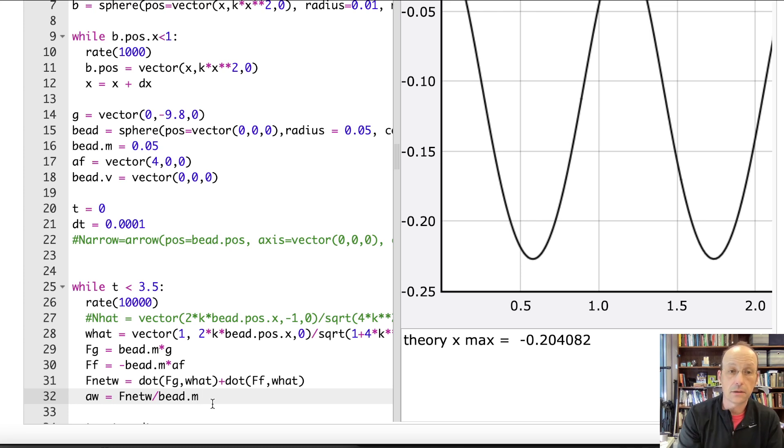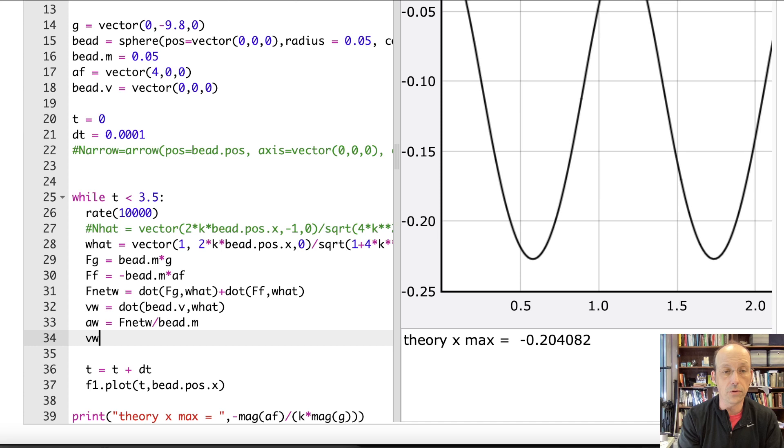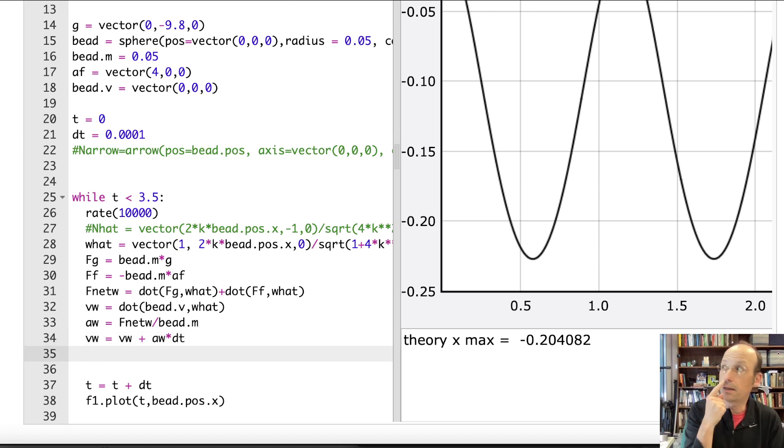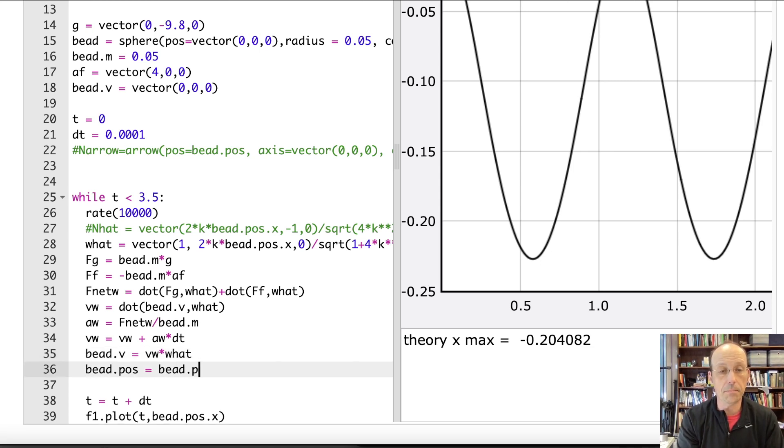Now with that, I can find, okay, I need the velocity in that direction too. So I have the initial, I have a b velocity. So I can say V W equals dot b dot V. I'm going to need to make a new velocity. I can do that. This seems really complicated. Okay. So now I'm going to have the acceleration of the velocity. I can use that to find the new velocity. V W equals V W plus A W times dt. Now I can find the new velocity vector. That's what I'm going to do. So b dot V equals V W times W hat. Right. Cause now I put it back as a vector. V W is a scalar version. I should have just made A W a vector. Oh well. Okay. So now I can update the position b dot pos equals b dot pos plus b dot V times dt. And that should do it.